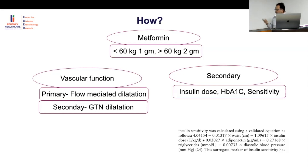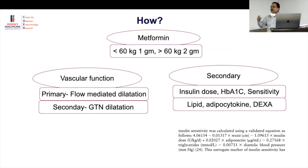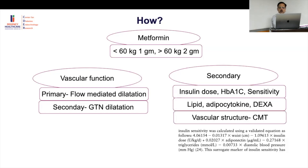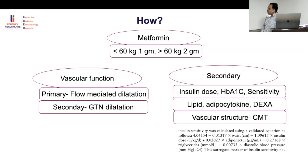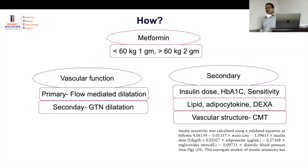They also looked at lipids, adipocytokines, DEXA, and carotid intima-media thickness as a marker of atherosclerotic development. The primary outcome determines the sample size — all other outcomes are secondary. If the sample size was designed for flow-mediated dilatation but HbA1c also fell significantly, is that HbA1c finding valid?